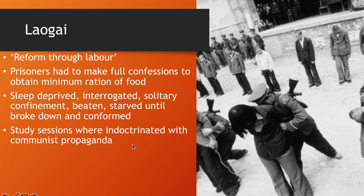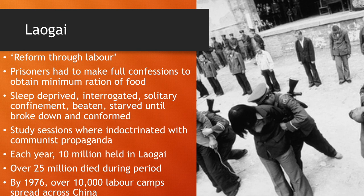They also had study sessions where prisoners were indoctrinated with communist propaganda. Mao removed opposition by sending people to the Laogai away from the public, torturing prisoners so that through fear they would not oppose communist government, and indoctrinating loyalty to the regime. Statistics on the scale of the Laogai system can help establish its significance and allow you to rank it in an essay.